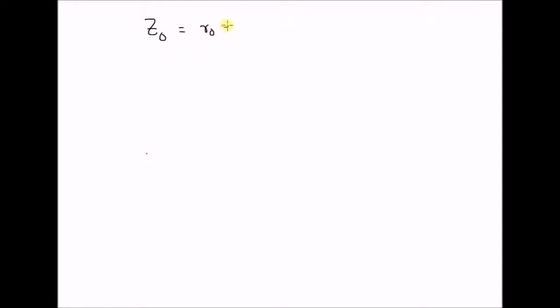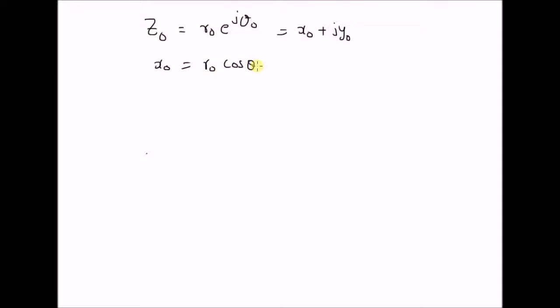Given the complex number z naught defined as r naught multiplied by e power j theta naught, which can also be written as x naught plus j y naught. Here x naught is equal to r naught multiplied by cos theta naught, and y naught is equal to r naught multiplied by sin theta naught. And of course, r naught square is equal to x naught square plus y naught square, and y naught by x naught is equal to tan theta naught.